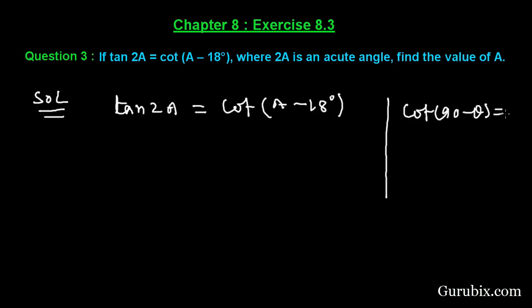Therefore, this tan 2A can be written as cot(90° - 2A), so we shall apply this formula here. Therefore, tan 2A can be written as cot(90° - 2A) equals cot(A - 18°).